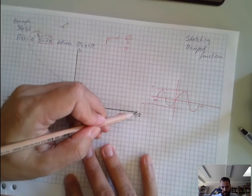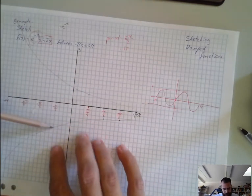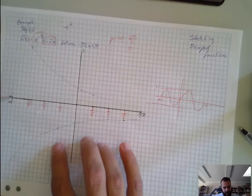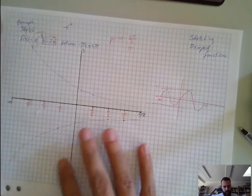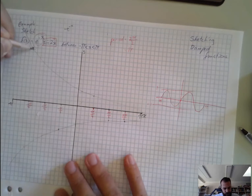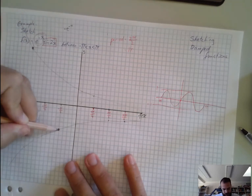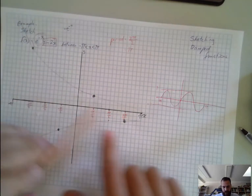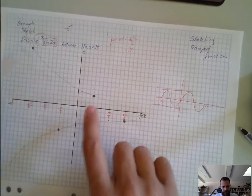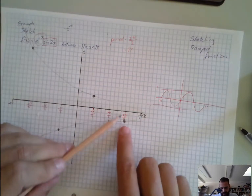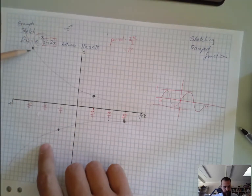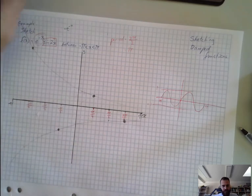And then back into the middle again. It's going to go down to here, back into the middle, up to here, back down here. But unfortunately we've got a small problem we'll have to deal with. We really want to know what those points are. So we just need to sub in π/4, 3π/4, negative π/4, and negative 3π/4 to find out what those values are.